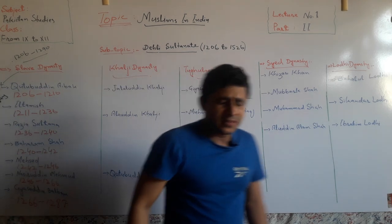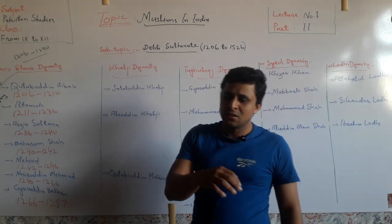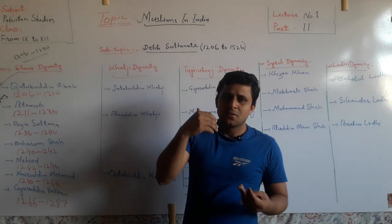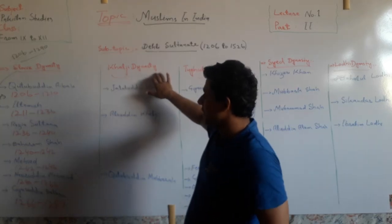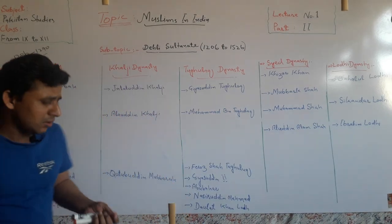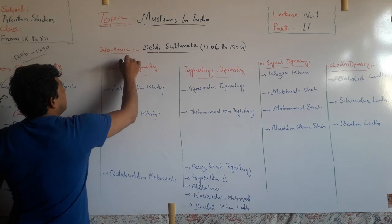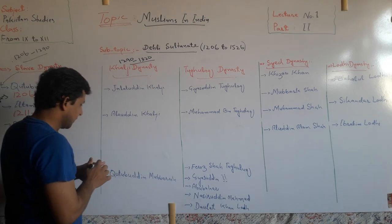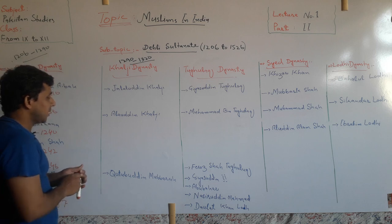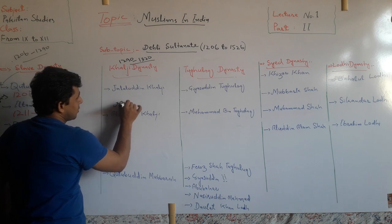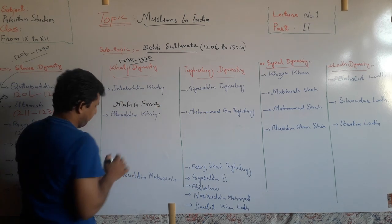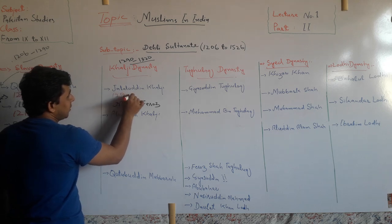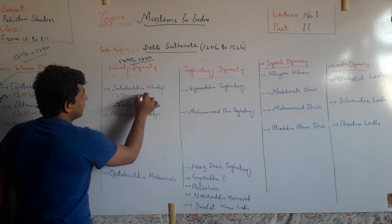After Giyasuddin Balban, the remaining rulers of the Slave dynasty were not strong and capable. That is why the Slave dynasty ended in 1290. The Khilji dynasty was founded by Jalaluddin Khilji and lasted from 1290 to 1320. The real name of Jalaluddin Khilji was Malik Firuz. He became the ruler of the Khilji dynasty from 1290 to 1296.